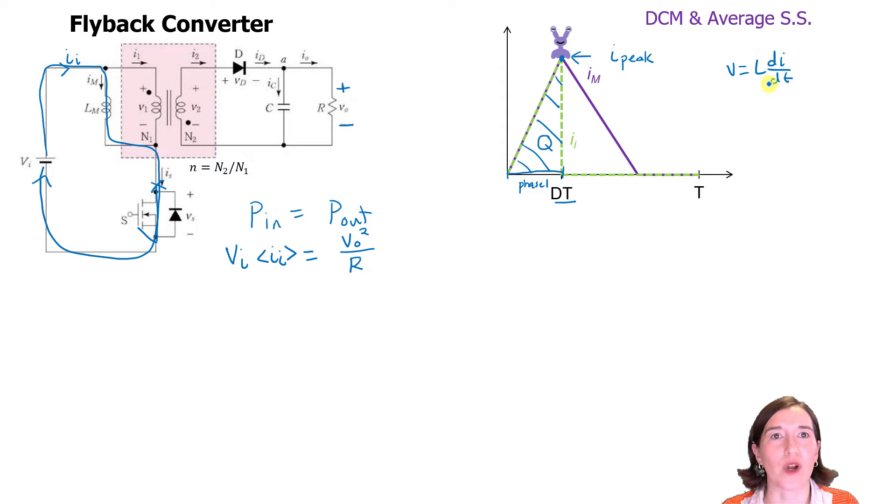And now we can look at the discrete part. So because in phase one, the voltage is constant, we can change this into V. And let's just put in the value. So V here, looking at phase one, is input, VI. And we have an L, it's LM. We'll put a little M here. And we have delta I. So that's how much the current is going to go up. So actually, that's going to be our peak value. And then we're going to have a dt.